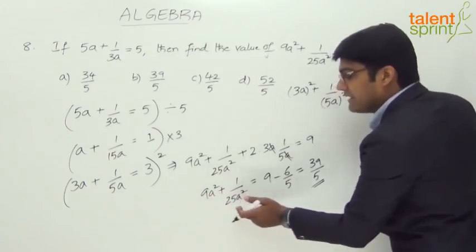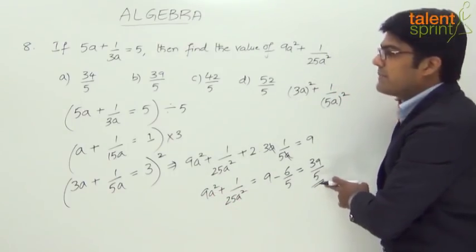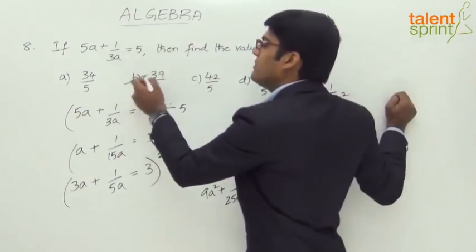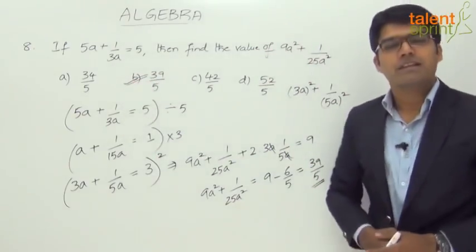So the answer here is 9a square plus 1 by 25a square equals to 39 by 5, which is option B. 39 by 5 is the required answer.